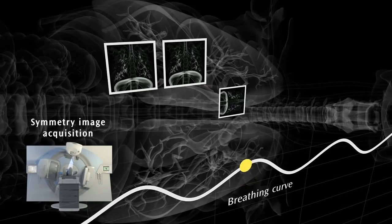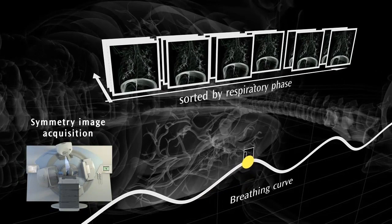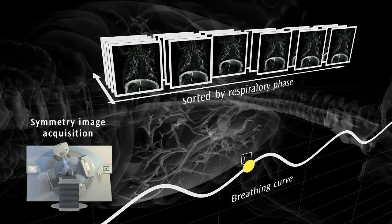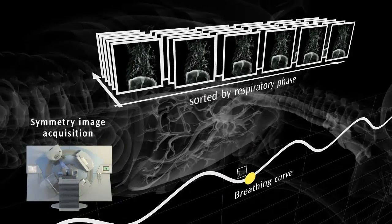Respiratory information available within the acquired images allows innovative anatomy correlated sorting. There is no need for external based solutions with Symmetry.